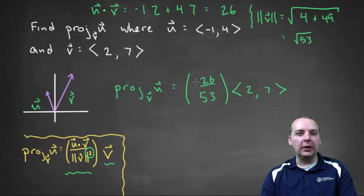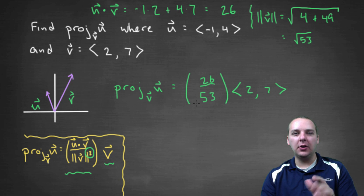So notice roughly twenty-six over fifty-three is around a half, it's about point five. So really all we're going to do is scale back this vector by a half, or fifty percent. And sure enough, look at the picture—I think that seems very reasonable.